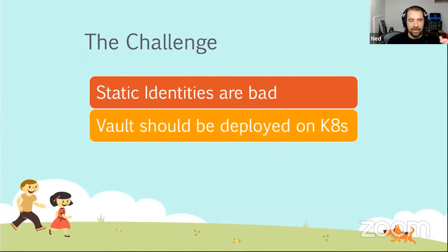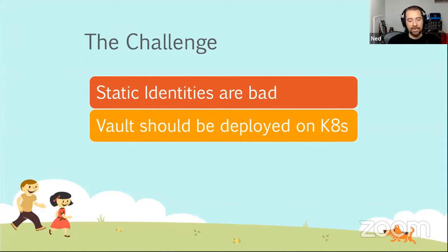The next challenge is that the recommended deployment model for Vault these days, if you're looking at the documentation, is that it should be deployed as containers on Kubernetes. That really does make sense for the way you'd want to manage and deploy Vault. Kubernetes is a natural fit — it's an easy way to get load balancing, to get HA, and to expand out additional Vault pods if you need them. You would need Enterprise to do true load balancing, but it makes a lot of sense from that perspective.